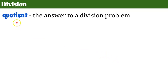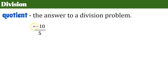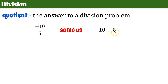Let's review division. Quotient is the answer to a division problem. So if you divide two values, the answer you get is also called the quotient. If you're asked to find the quotient, you're being asked to divide. Remembering that if we have this rational value, negative 10 fifths, that is the same as saying negative 10 divided by 5, reminding you that a fraction bar is also a division symbol.